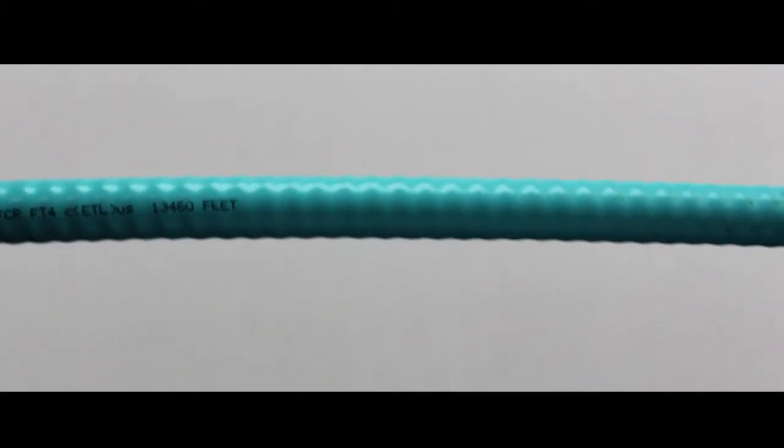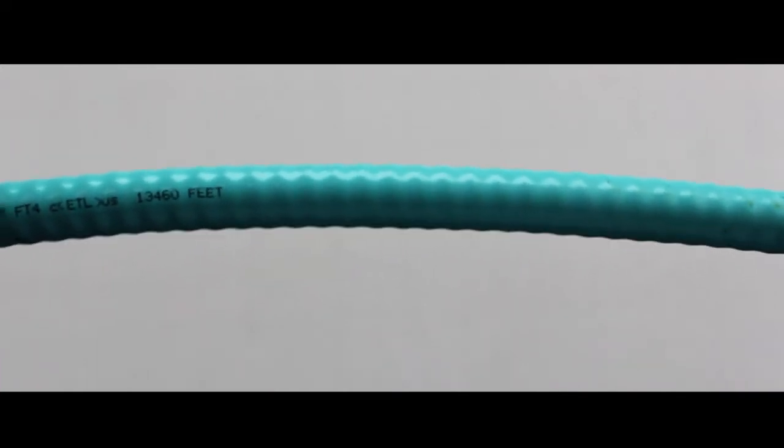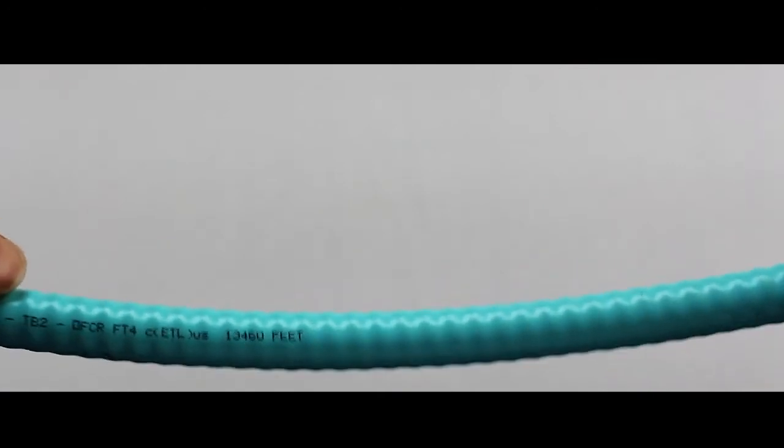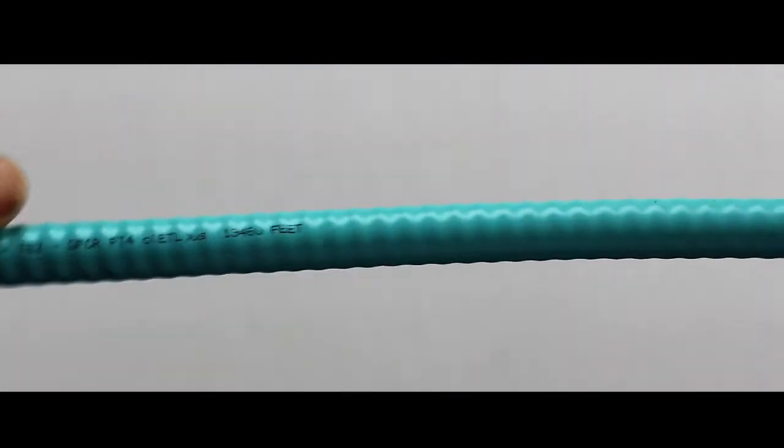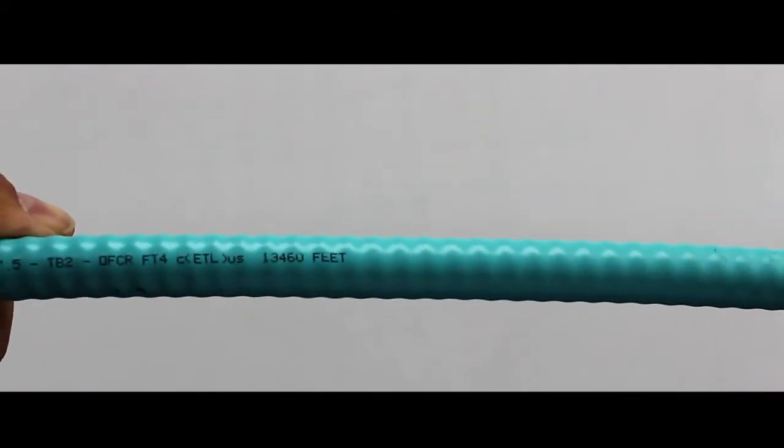Here's your interlocking indoor armored fiber cable. This type of cable is very popular in areas where you need some extra strength. The armor underneath this jacket will provide that. As you can tell it is somewhat flexible and this is available in a PVC and plenum rated jacket.